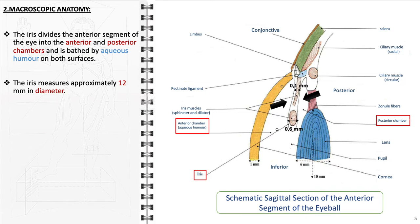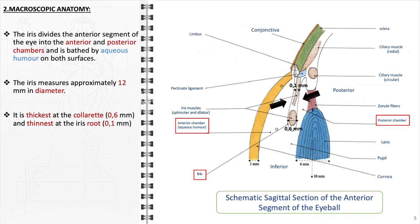The diameter of the iris typically measures around 12 mm. It exhibits variability in thickness, with the densest part being at the collarette, measuring approximately 0.6 mm, and thinnest at the iris root, measuring around 0.1 mm.